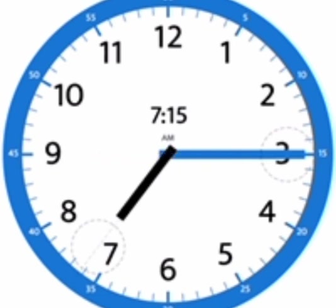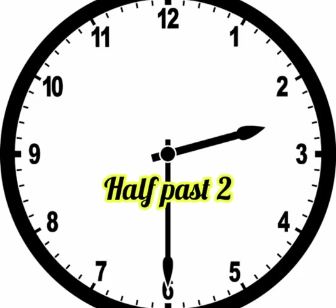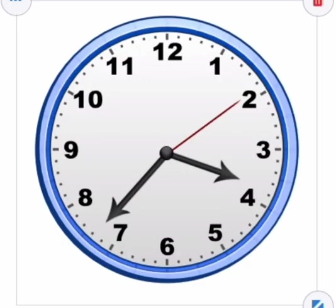Next clock time: the hour hand is at 2 and the minute hand is at 6, so the time is two thirty — two hours thirty minutes. This is how we say it: half past two. After 30 minutes, we say half past two.